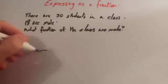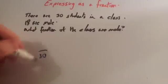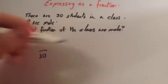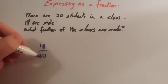So, all together, there's 30 students in the class. So you write that on the denominator, the bottom line of the fraction. 18 are male. So what fraction of the class are male? Well, 18 out of 30, 18 thirtieths are male.